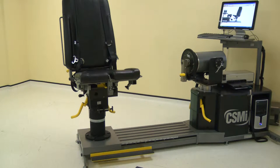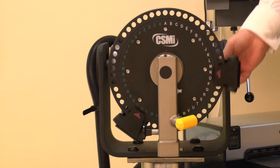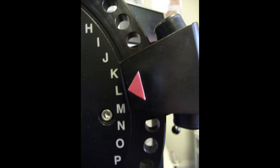First ensure all of the adapters and stabilizers are removed. Move the first dynamometer stop to position L on the wide scale. Now move the second stop to position X on the wide scale.